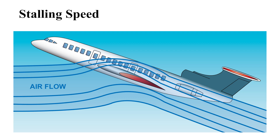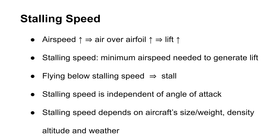Another important concept to understand is stalling speed. An aircraft produces lift as air molecules move over its wings. At high air speeds, the air moves faster over the airfoil, producing higher lift. At slower air speeds, fewer air molecules pass over airfoils, producing less lift. This means that all aircraft have certain stalling speeds. This is the minimum speed needed for an aircraft to generate lift. Aircraft flying below their stalling speed will stall and fall. Moreover, the stalling speed does not depend on the angle of attack.